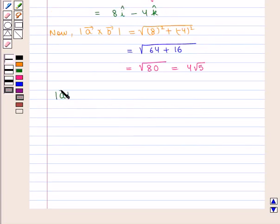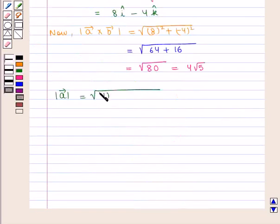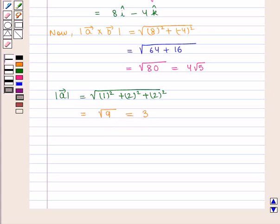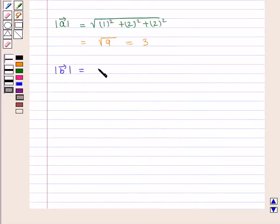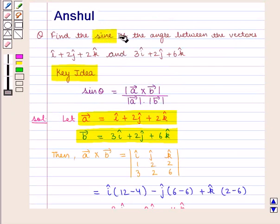Modulus of vector A is given by square root of 1 squared plus 2 squared plus 2 squared, which is equal to square root of 9, that is 3. And modulus of vector B is given by square root of 3 squared plus 2 squared plus 6 squared, which is equal to square root of 9 plus 4 plus 36, that is square root of 49, which is 7.